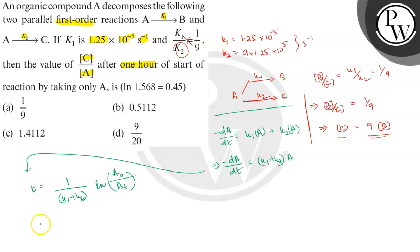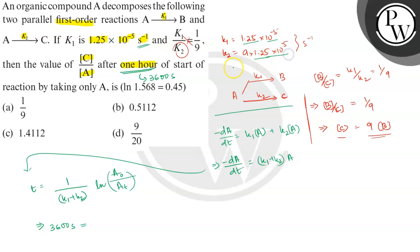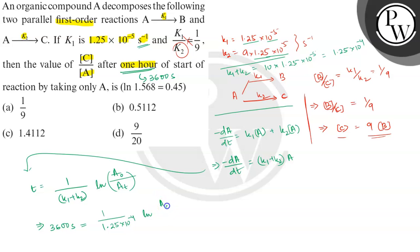The time given is 1 hour = 3600 seconds. Since rate constants are in second inverse, we express time in seconds. Substituting: 3600 = 1/(k1+k2) × ln(a0/at). Now k1 + k2 = 10 × 1.25×10⁻⁵ = 1.25×10⁻⁴ s⁻¹. So 3600 = (1/1.25×10⁻⁴) × ln(a0/at).